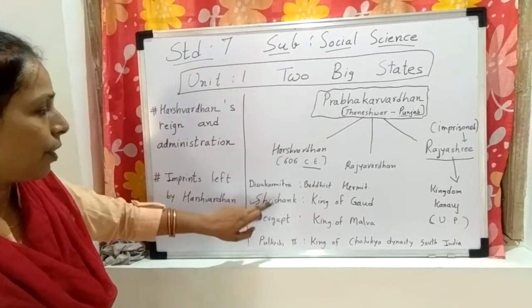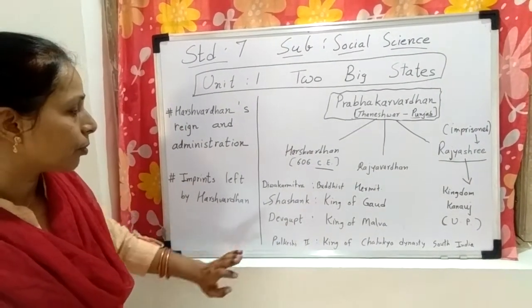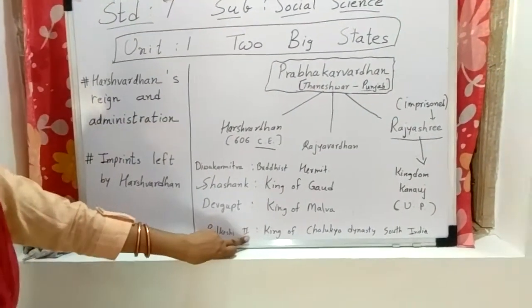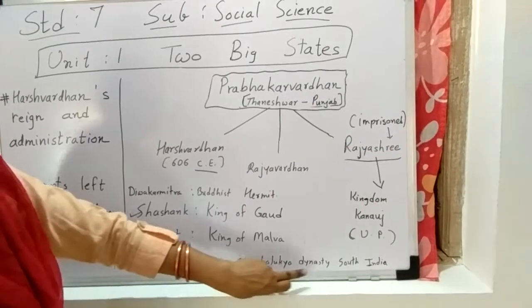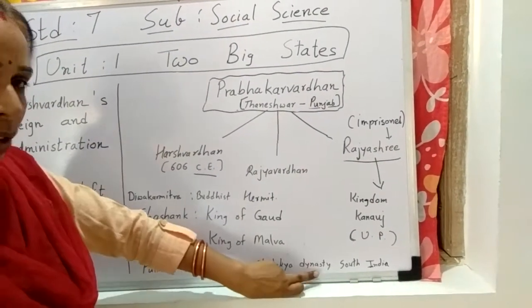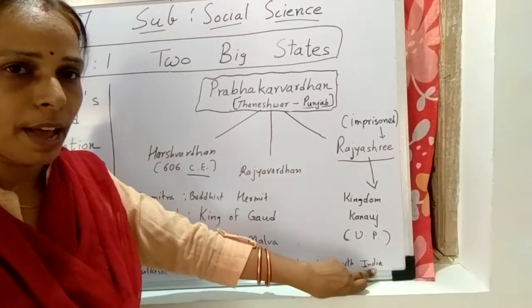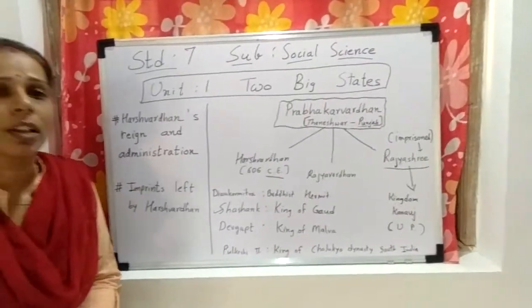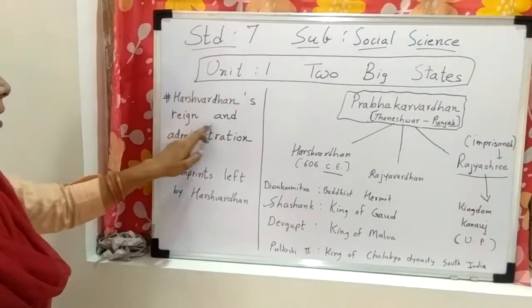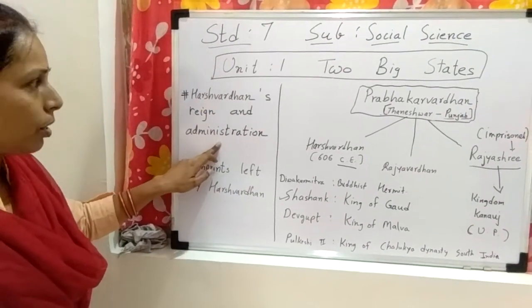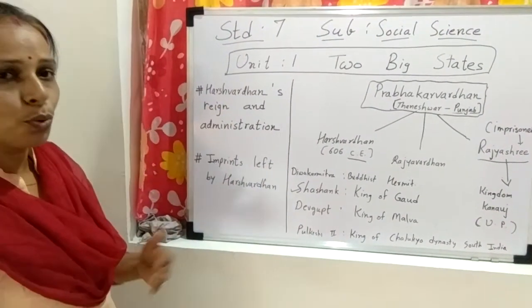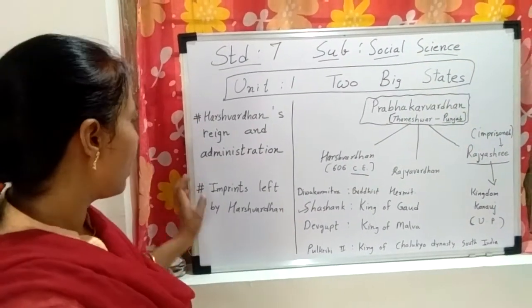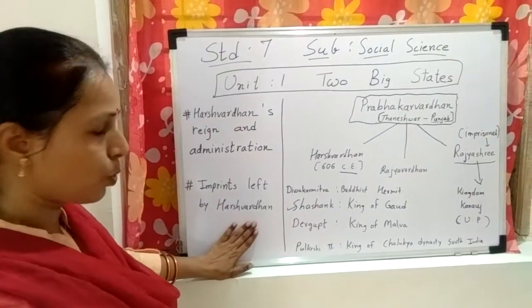Harshvardhan defeated both these kings. But he could not defeat Pulkeshi II, king of the Chalukya dynasty of South India. Today we will learn about Harshvardhan's reign and administration — how Harshvardhan ruled and administered his state, and the imprints left by Harshvardhan.